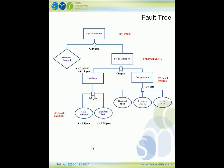For condition B, applying the frequencies to how over pressure could happen: the electrical fault is 0.05 per year, the pressure switch is 0.1 per year, and the relief valve is 0.05 per year. Because this is an OR gate, we add the frequencies: 0.1 plus 0.05 plus 0.05 gives a frequency of 0.2 per year. To get the frequency for the boiler explosion, we add the frequency of the low water plus the frequency of the over pressure: 0.15 plus 0.2 gives a frequency of 0.35 per year.